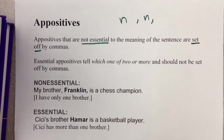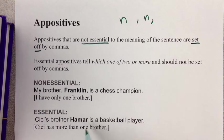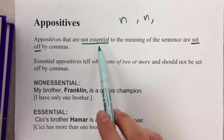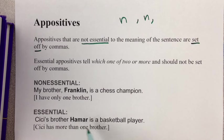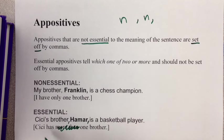But if I had more than one brother, like Cece here, I would not want to put commas. For example: 'Cece's brother Hamar is a basketball player.' Because there are no commas, the reader can assume that Cece must have other brothers, and knowing his name is extremely important — it is essential in this sentence. If I put commas on both sides of 'Hamar,' then Cece only has one brother.